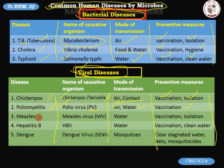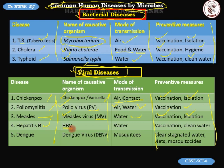Third is measles, caused by measles virus (MV). Mode of transmission: water. Preventive measures: vaccination and isolation. Fourth is hepatitis B, caused by hepatitis B virus (HBV).